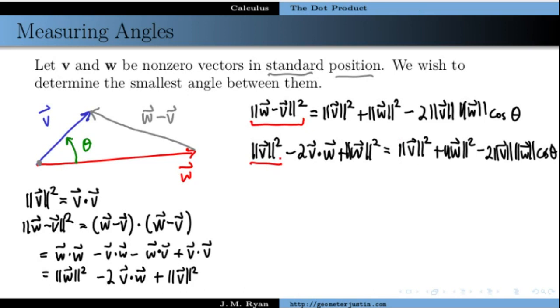And now all we have to do is cancel and rearrange, and then we've got our result. So we see here, we've got v squared v squared, length of v squared I should say, those cancel. We've got length of w squared, length of w squared, those cancel. And at this point now, what we have is negative 2 times something equals, everything else is gone here, equals negative 2 times something.